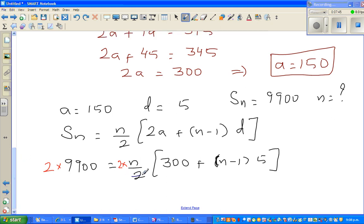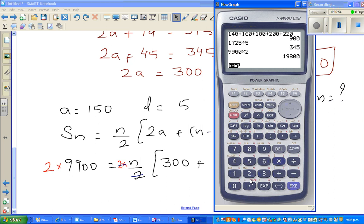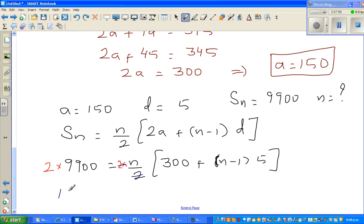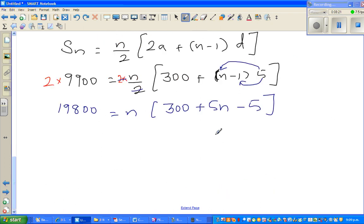So 9900 times 2 is 19800. Therefore 19800 equals n times (300 plus 5n minus 5). Let me open the bracket now: 5 times n gives you 5n, and 5 times minus 1 gives you minus 5. What I've done is expanding this: n times 5 gives you 5n and 5 times minus 1 gives you minus 5.